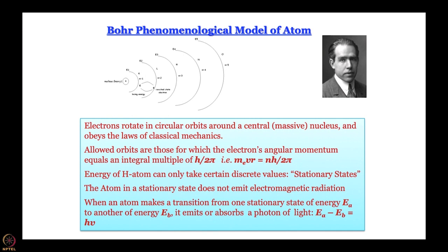An electron can only reside in stationary states or allowed orbits where mvr = nħ. When it jumps from one stationary state to the other, the difference in energy of the stationary states is either emitted or absorbed as light, depending on which energy state is higher and which is lower in energy.